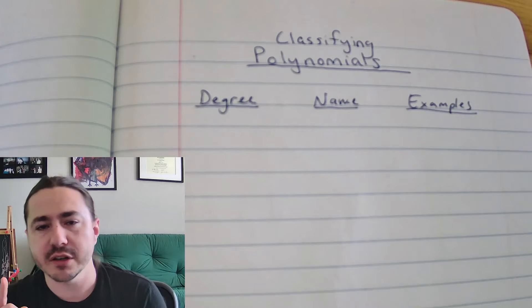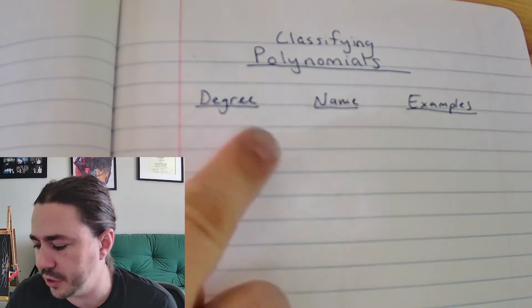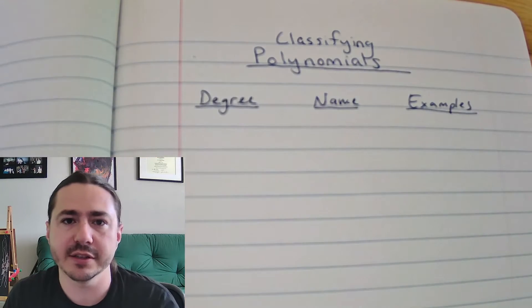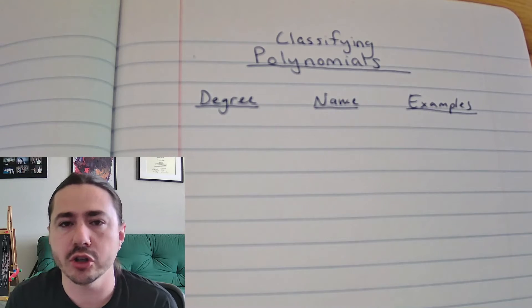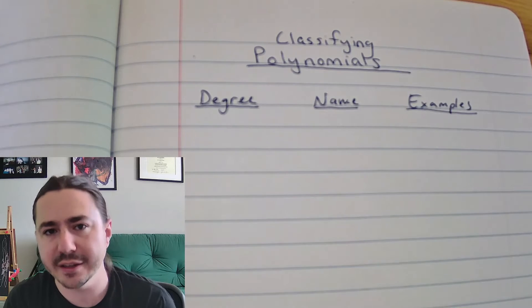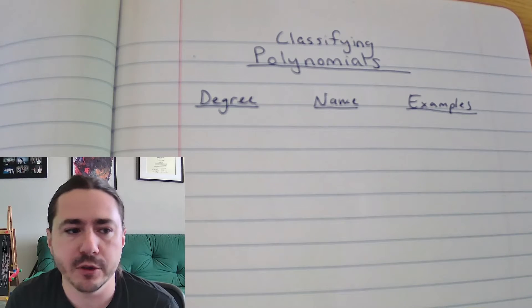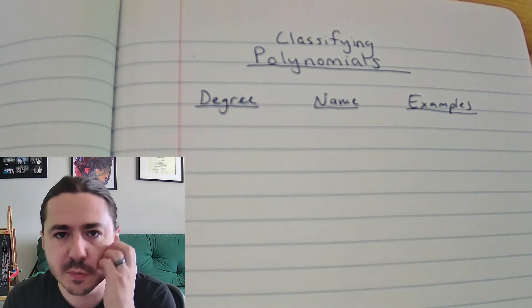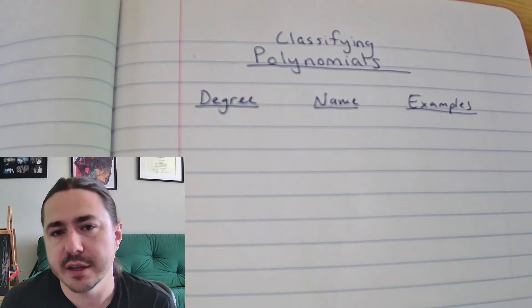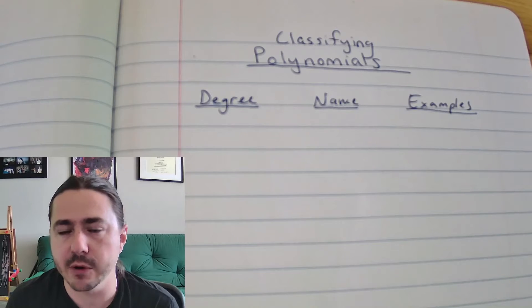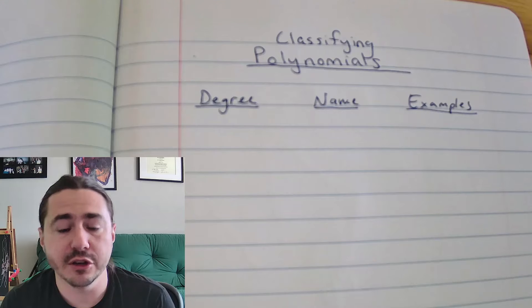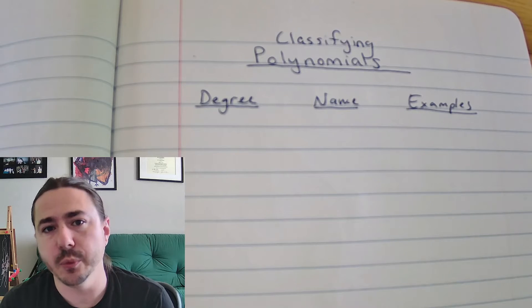The first characteristic you want to look at is the degree of the polynomial. The degree is the largest exponent that you see on any x — so usually it'll be like 2, 3, 4. If you don't see an exponent or a power, then you're either going to have degree 0 or degree 1.